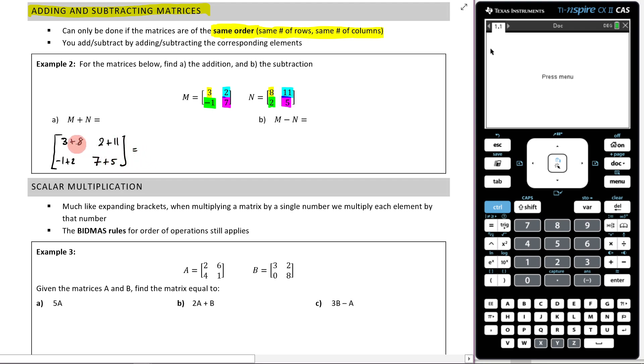So that's going to be three plus eight is 11, two plus 11 is 13, negative one plus two is one, and seven plus five is 12. So hopefully you can see what it is that we've done here. Nothing too confusing. We took three and eight, we added them there. There it was there.